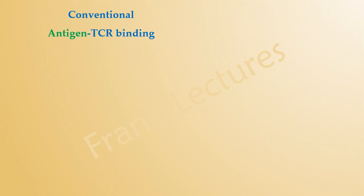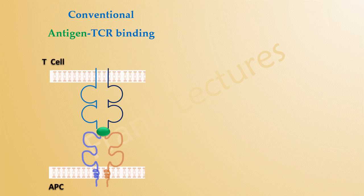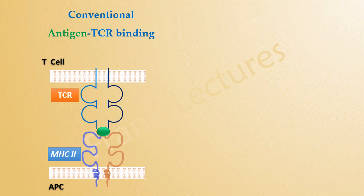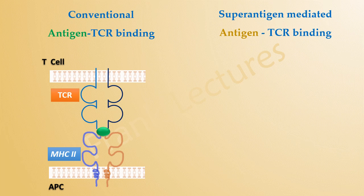Have a look at the details of conventional antigen T-cell receptor binding. This represents the T-cell receptor on the T-cell. This is the MHC2 molecule displaying the specific antigen on the APC. Note that the antigen is specific to the T-cell receptor. Now have a look at what happens when a superantigen is present.